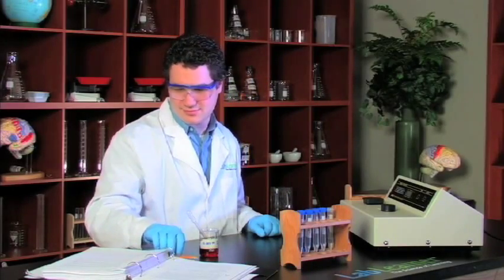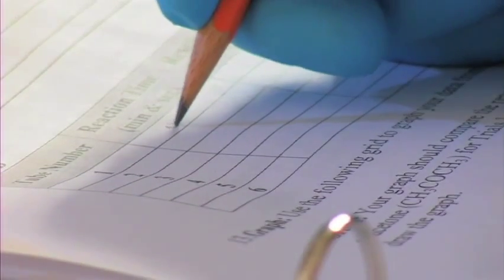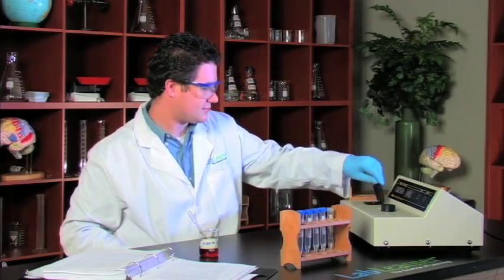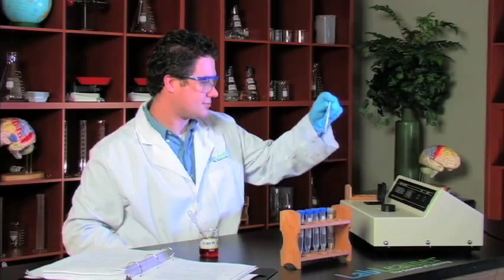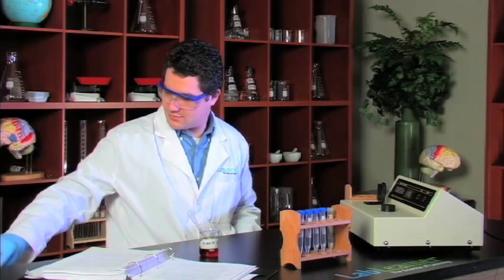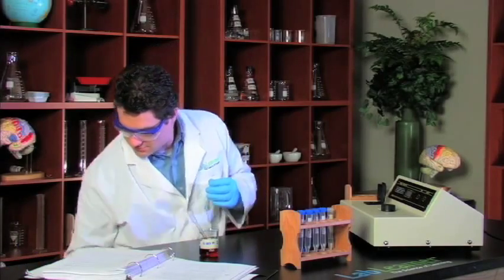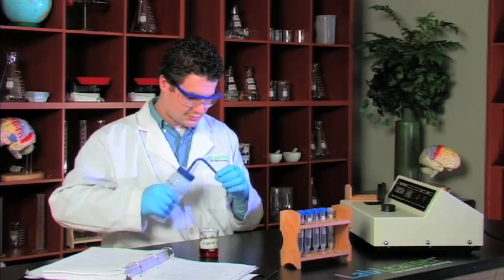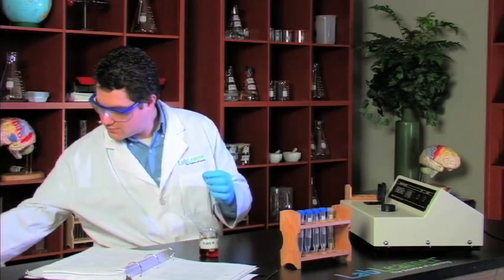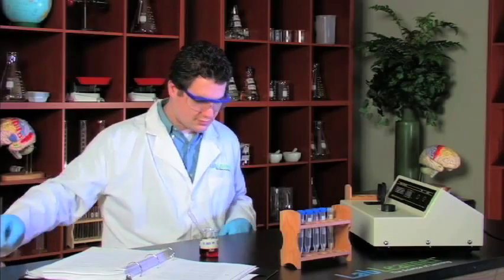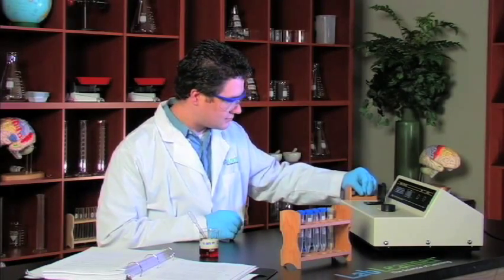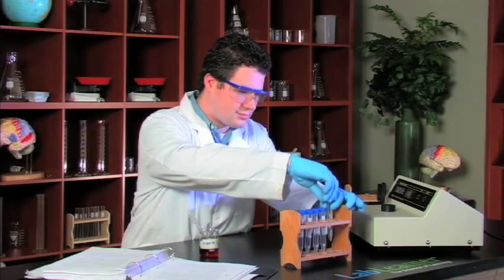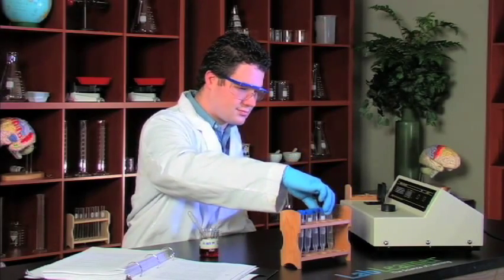And here we come, and so he stops the stopwatch and we're going to record the amount of time that it took in reaction number one or tube number one for all the iodine to be used up. With that reading we empty out the cuvette, rinse it out with water, and we'll get ready for the next reaction. He resets the stopwatch so he's ready to do tube number two.